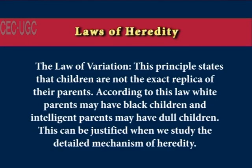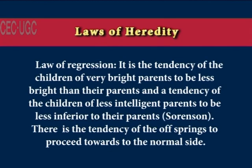The law of variation states that children are not the exact replica of their parents — white parents may have black children and intelligent parents may have dull children. This can be justified when we study the detailed mechanism of heredity. The law of regression is the tendency of children of very bright parents to be less bright than their parents, and the tendency of children of less intelligent parents to be less inferior than their parents. These laws help us in understanding human qualities and characteristics.